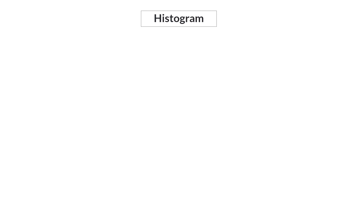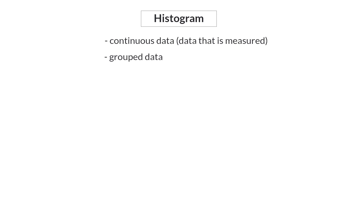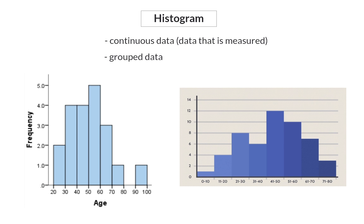A histogram is used for continuous data, or data that is measured. For that reason, the data will be grouped and we will make use of different class intervals. The class intervals can be indicated in different ways. For example, the first class starts at 20 and ends at 30, so the interval is from 20 to 30. In another example, the class interval is specifically written as 0 to 10. Because the class intervals follow on each other in a histogram, there will be no spaces between the bars.